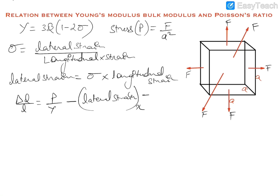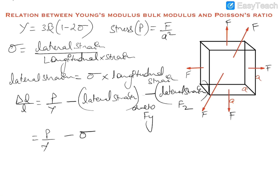We have to subtract the lateral strain in X direction due to the Y force Fy, and also subtract the lateral strain due to the Z force Fz. Lateral strain equals sigma — which is the Poisson's ratio — into longitudinal strain, and longitudinal strain is again P upon gamma. Similarly for the Y direction, it is sigma P upon gamma. So delta L by L equals, taking P upon gamma as common, 1 minus 2 sigma.